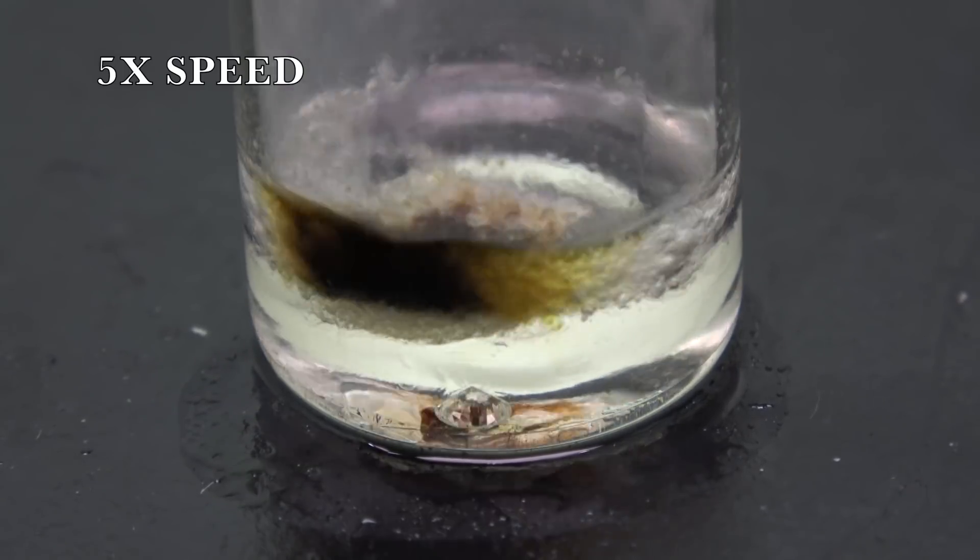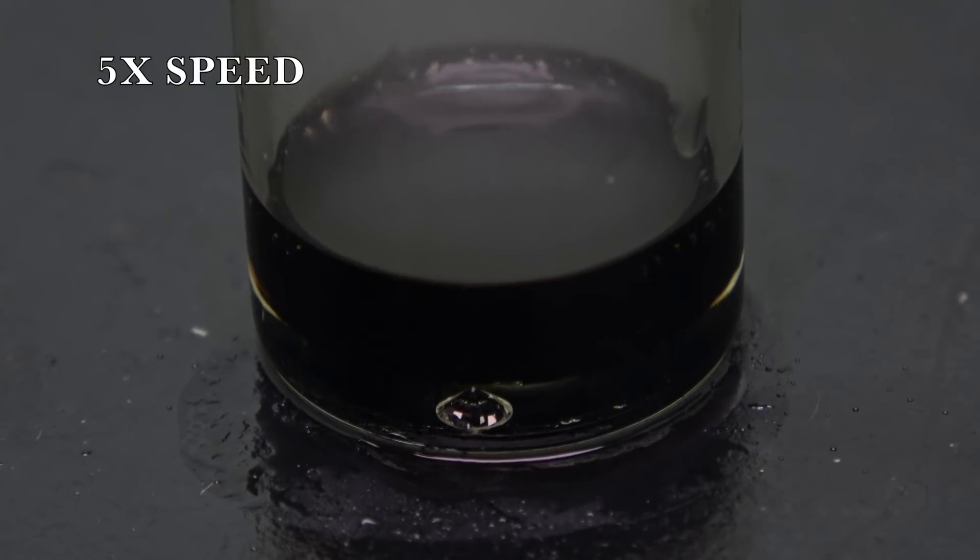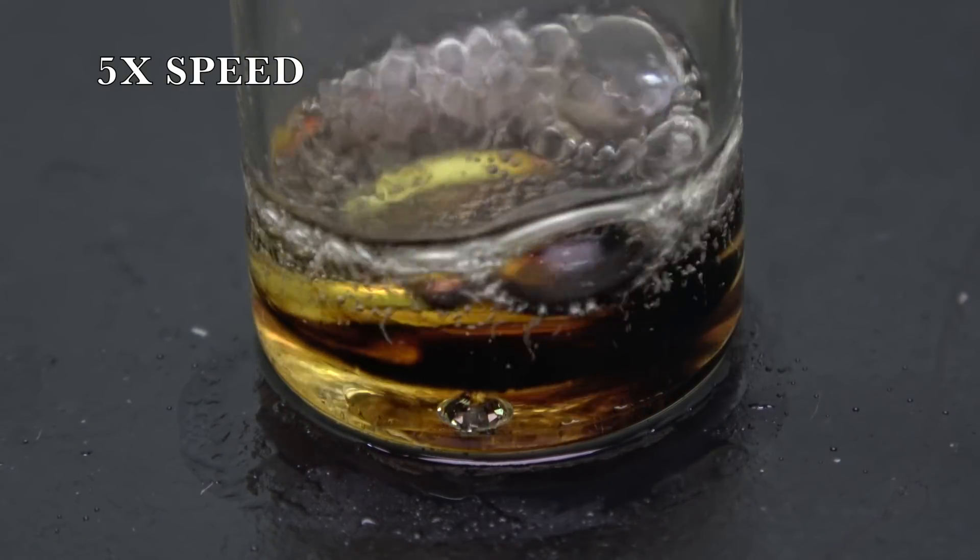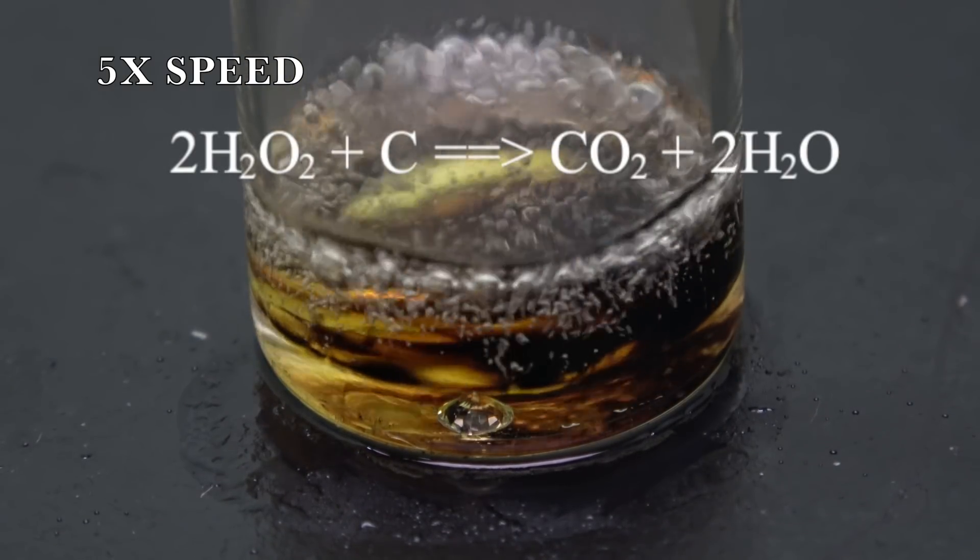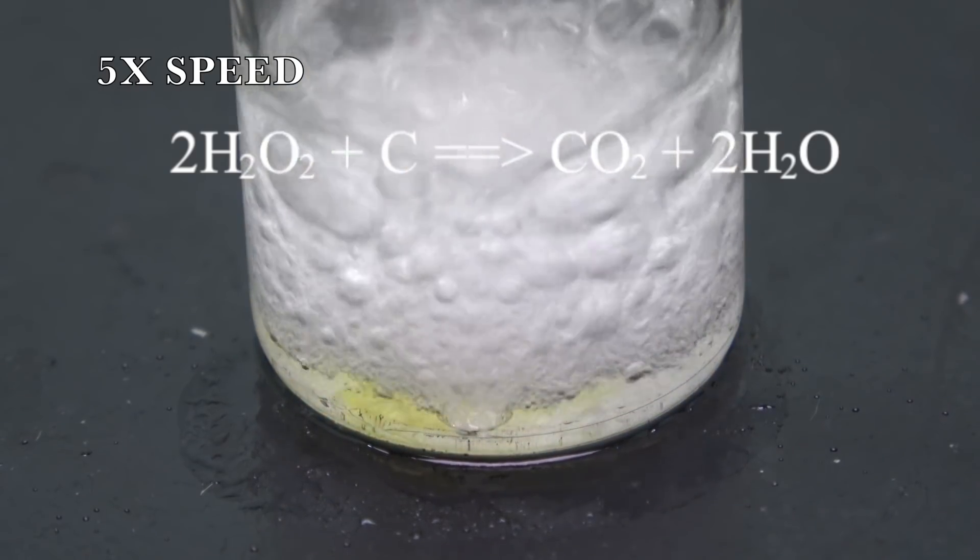To speed things up, I added a few drops of 30% hydrogen peroxide. Essentially, I was making a famous mixture known as Piranha solution. Hydrogen peroxide grants the mixture an insane oxidation power. It oxidizes the carbon to carbon dioxide.